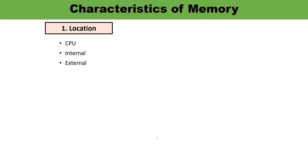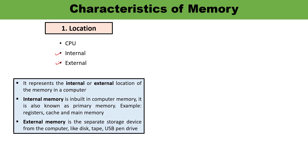First, let us discuss location. When talking about the location of memory, we are talking about CPU memory — internal or external memory. Internal memory is inbuilt in the computer and is also known as primary memory. Examples of primary memory include registers, cache, and main memory. External memory is a separate storage device connected to the computer but not inside it — examples include tape and USB pen drives.